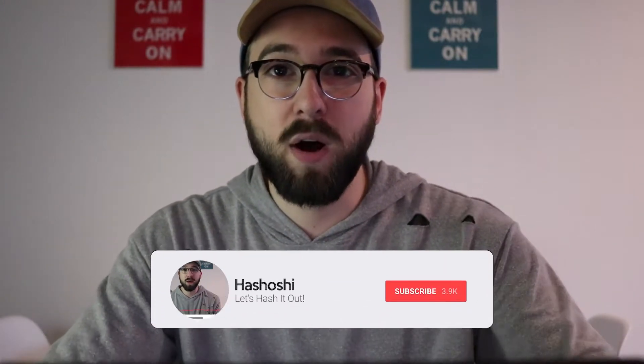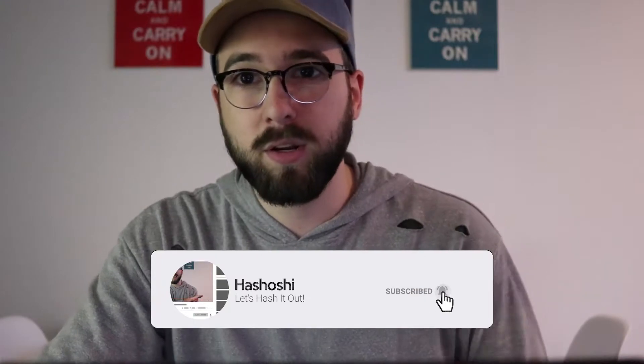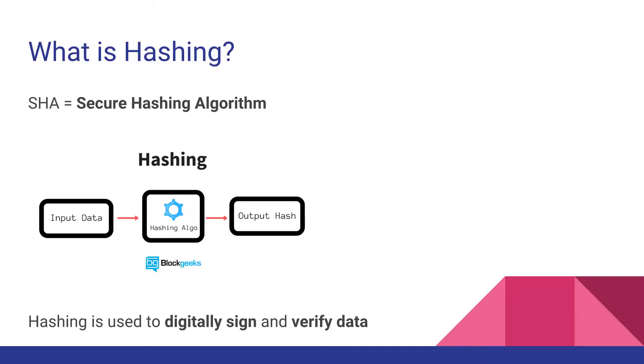That data gets fed into the secure hashing algorithm and out pops 64 characters, a fixed length. And if I put in my cousin's name, Ev — just two characters of data — out comes 64 characters of data. So a variable length input to a fixed length output. And why should you care about secure hashing algorithms? Well, because secure hashing algorithms are actually the most crucial component of blockchain infrastructure and blockchain protocols.